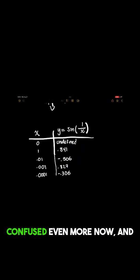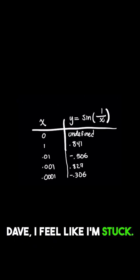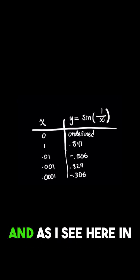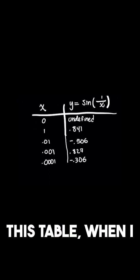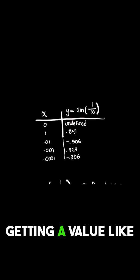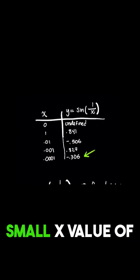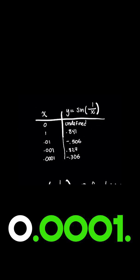So maybe you're confused even more now and you're just wondering, OK, Dave, I feel like I'm stuck. I tried plotting some values. And as I see here in this table, when I plugged in values that are rapidly approaching zero, I'm getting a value like negative 0.306 approximately for a very small x value of 0.0001.